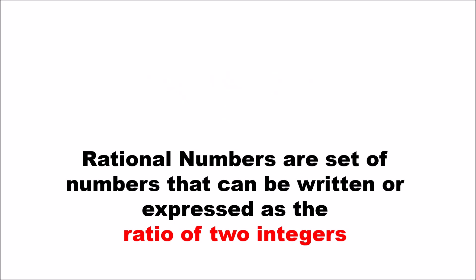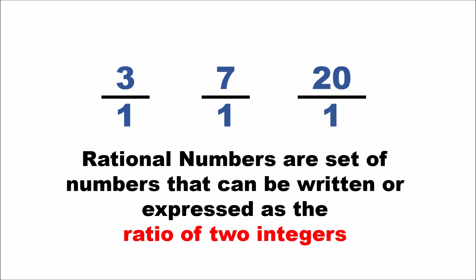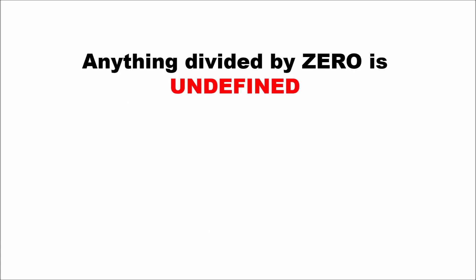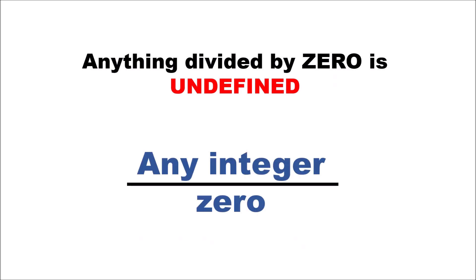Examples of integers expressed as rational numbers by dividing by one include three over one, seven over one, or twenty over one. The only number you cannot have in the denominator when making a rational number is zero, because that is what we call undefined.